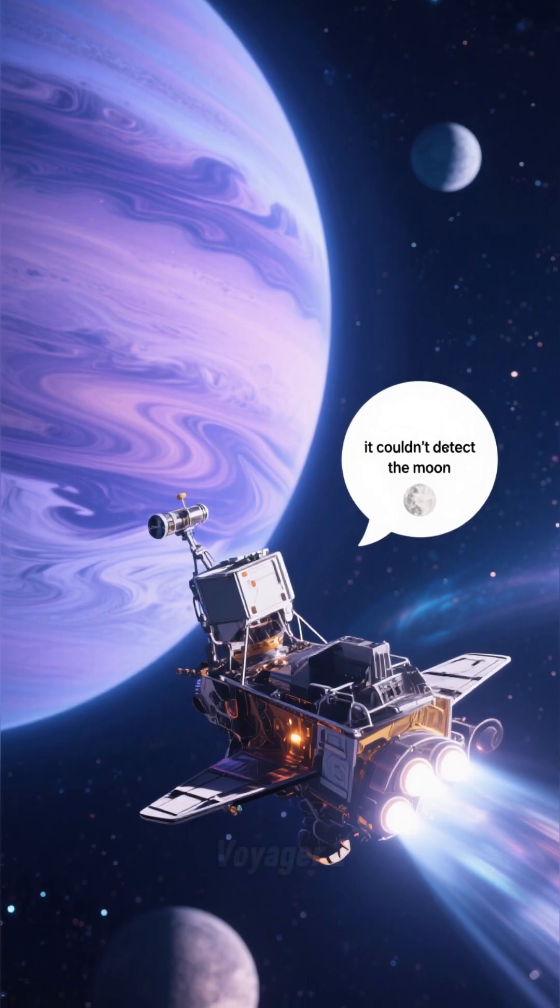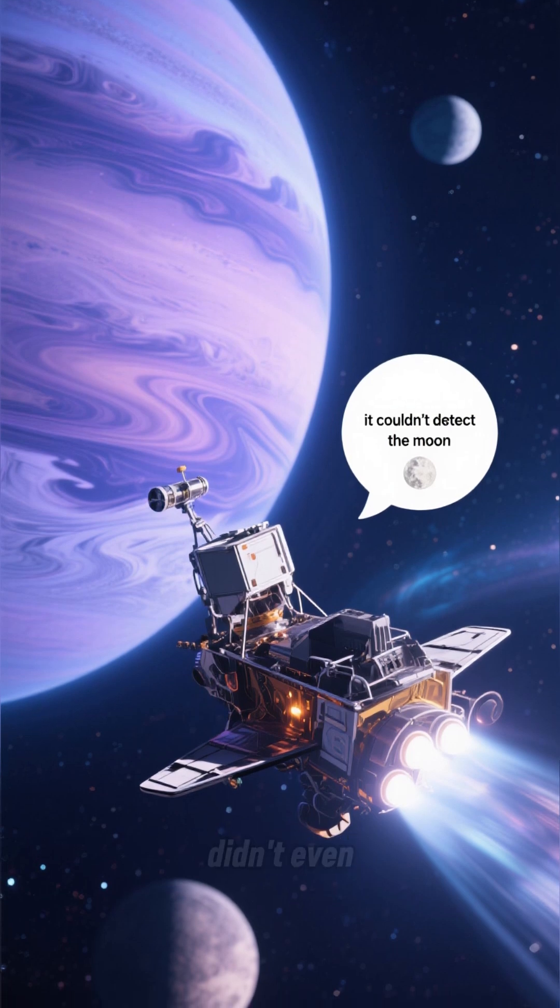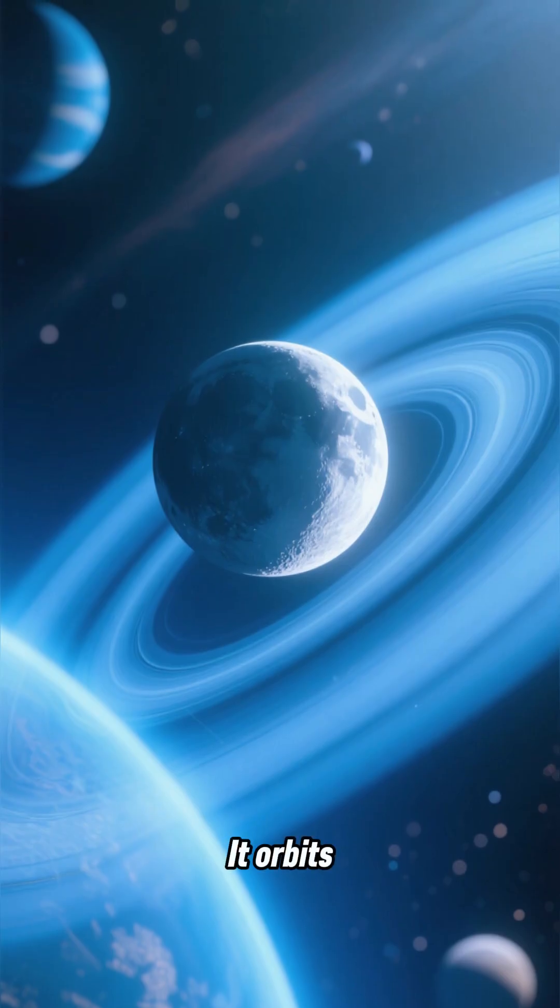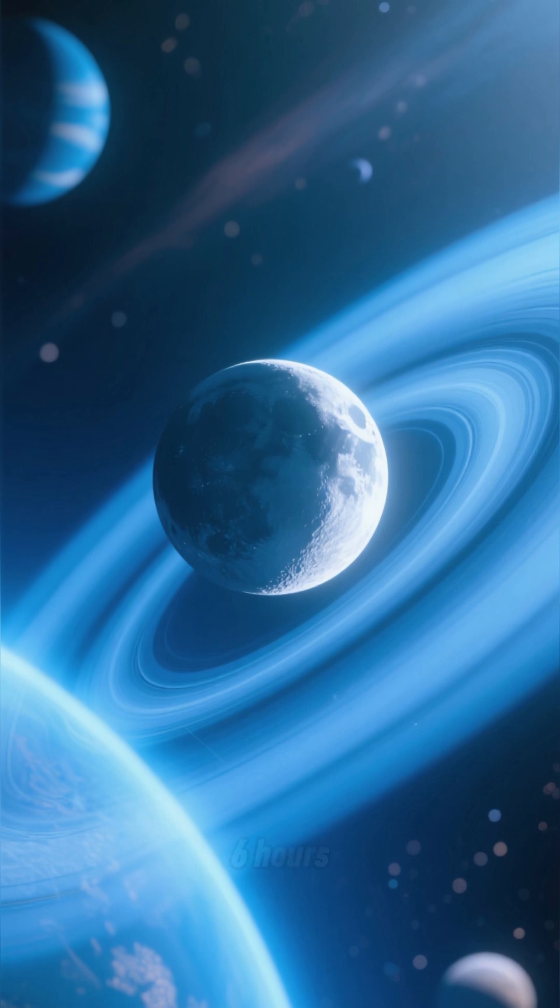The James Webb Telescope spotted it. In 1986, Voyager 2 flew by Uranus and didn't even see it. That's how small it is.